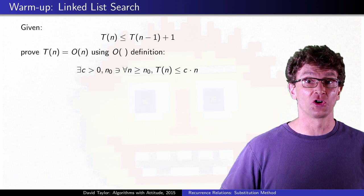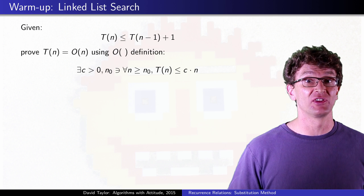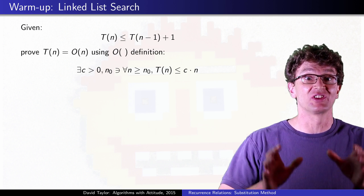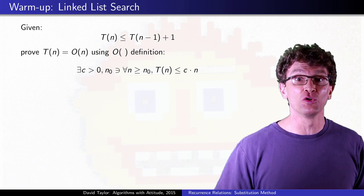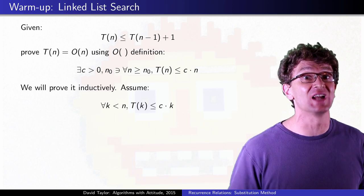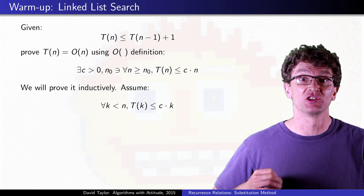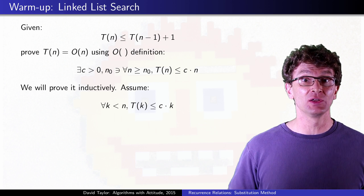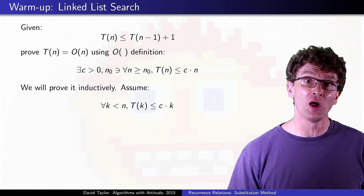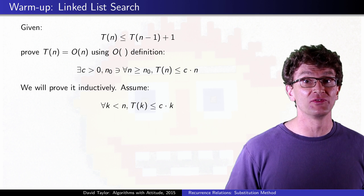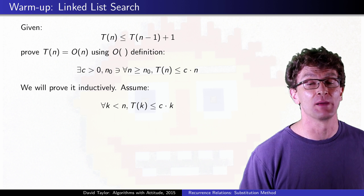We start with the recurrence for searching a linked list. The basic technique of the substitution method is to just guess the answer, and then try to prove that your guess is correct using induction. In this case we guess the relation is O(n); inductively we just assume that relation holds for all values smaller than n, and try to prove that that implies the relation holds for T(n), the time of the algorithm.